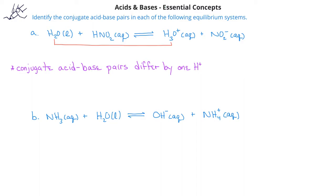The other question is, which of these two species will be acting as the acid and which will be acting as the base? On the reactant side of the equation, we see that the water is accepting a hydrogen ion to become H3O+, so therefore the water is initially a base and the hydronium ion would be its conjugate acid. Now let's look at the other two species. We have nitrous acid on the reactant side and the nitrite ion on the product side — these two structures differ by one hydrogen ion, therefore the nitrous acid and the nitrite are also a conjugate acid-base pair.